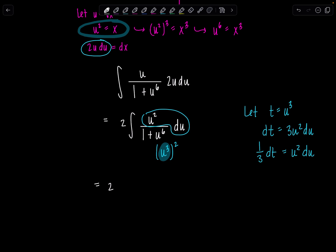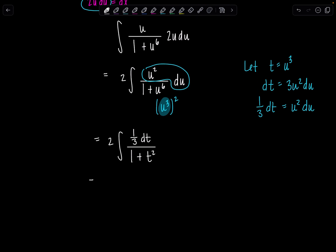Very good. Okay, so let's rewrite this now. We have two times, instead of u squared du, I have 1 3rd dt in the numerator over 1 plus t squared. And then let's take that 1 3rd out. 2 3rds integral dt over 1 plus t squared. Oh, fabulous. So this antiderivative we should know. 1 over 1 plus t squared? Yes, it's tan inverse. Okay, tan inverse of t plus c.